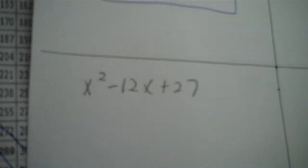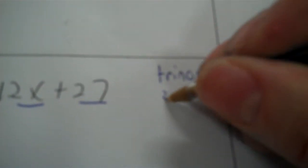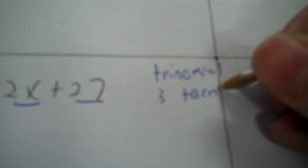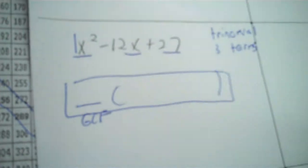Next problem: x squared minus 12x plus 27. That is three terms, so it is a trinomial — or you can write 'three terms,' whichever you're comfortable with. For a trinomial, we do the GCF first, then we set up the T-table with A, B, and C.